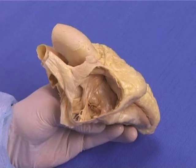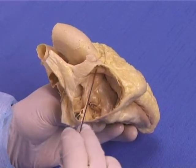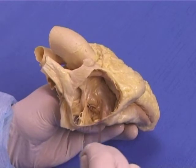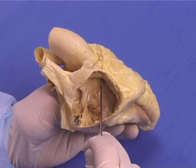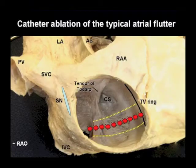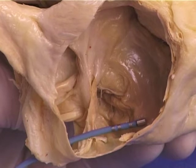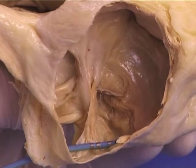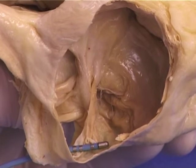Catheter ablation of the typical atrial flutter. It is well known that the mechanism of typical atrial flutter is a macro-reentrant circuit parallel to the tricuspid valve annulus across the zone of the right isthmus. This is located between the ring of the tricuspid valve and the ostium of the inferior caval vein. In order to cure a patient with recurrent typical atrial flutter, it is necessary to provide a bidirectional conduction block across this area. The conduction block is created by successive radiofrequency applications using the ablation catheter from the tricuspid valve ring towards the inferior caval vein.